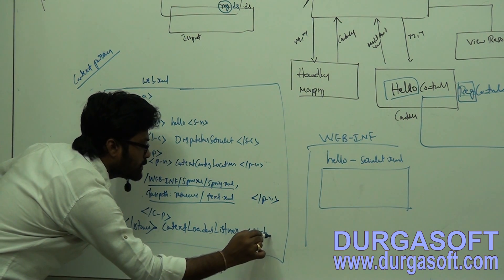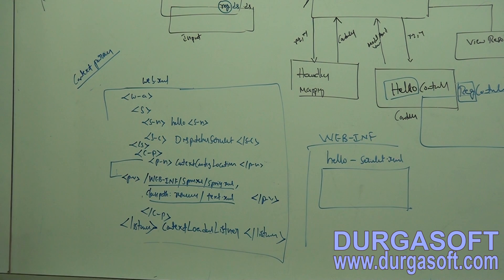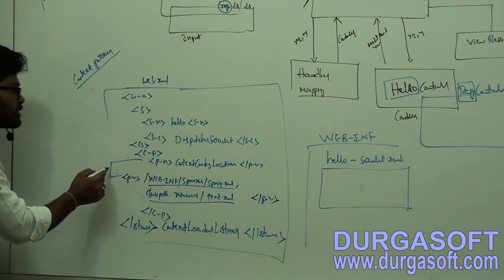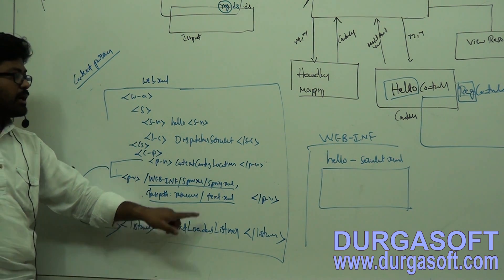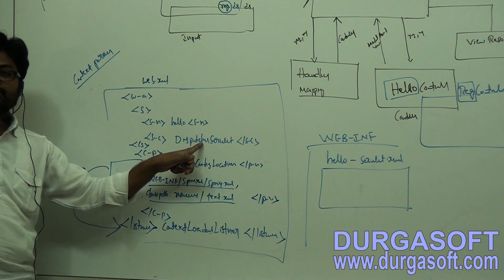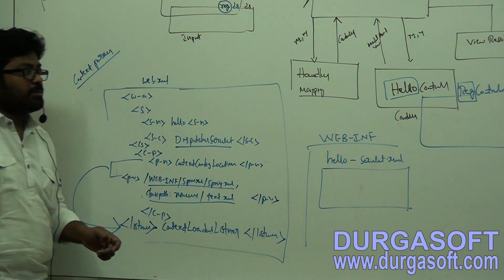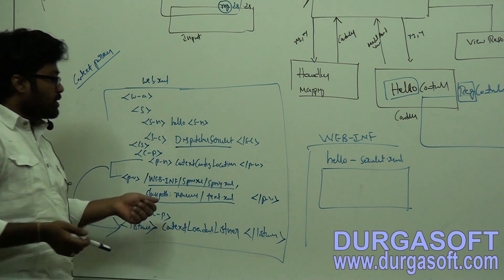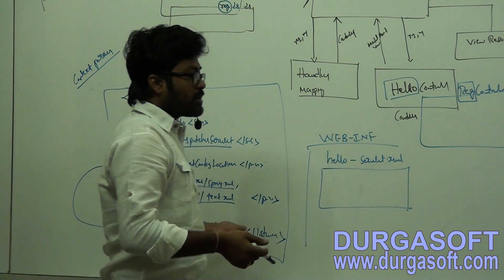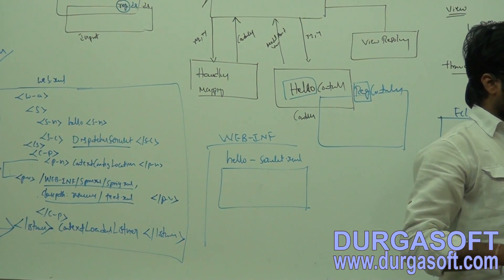This listener class you should configure to load this context data. In this case, the context loader listener class will load the data and make it available to the dispatcher servlet. So in case of init parameters, the dispatcher servlet is responsible to load data. In case of context parameters, the context loader listener will load that XML file data.